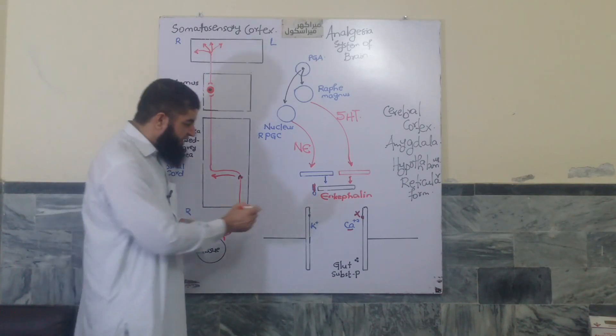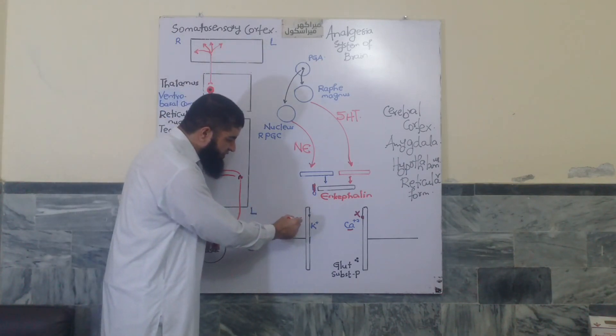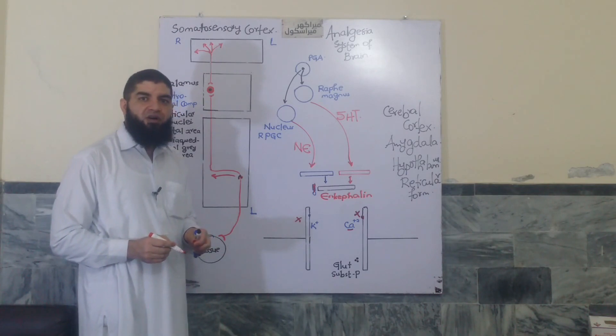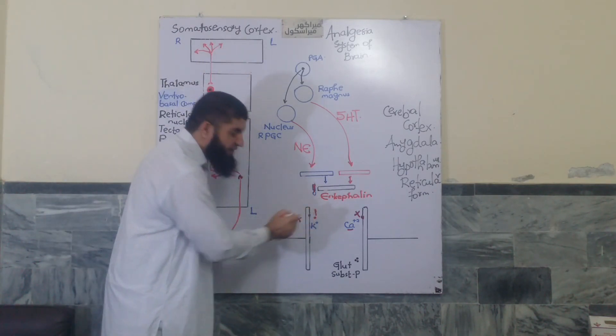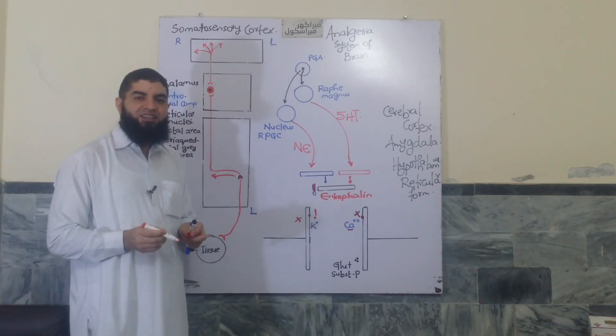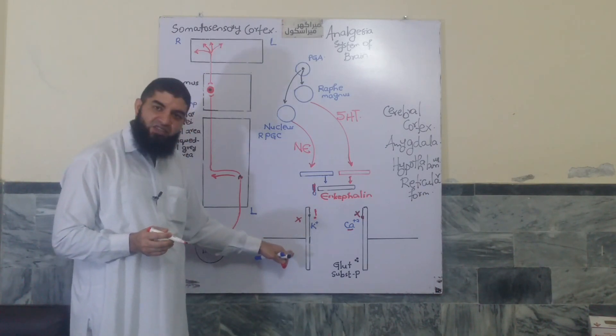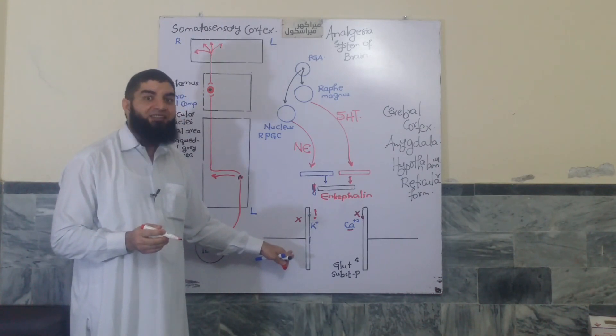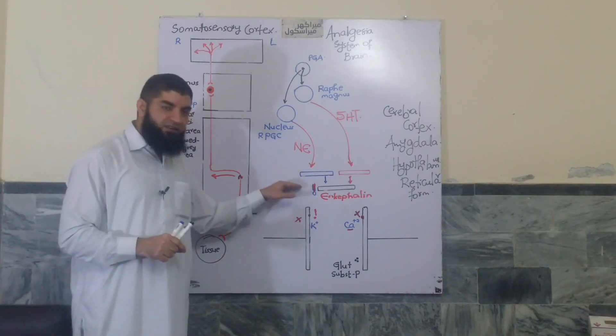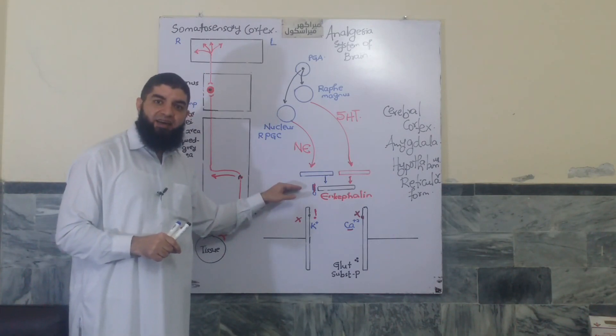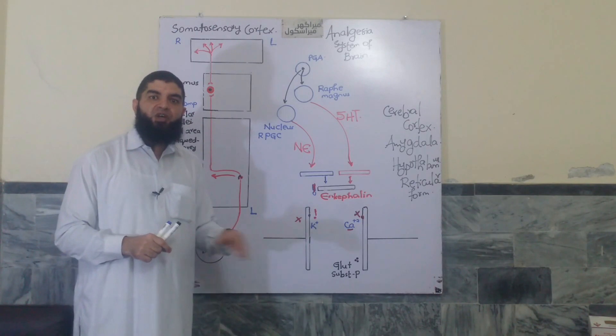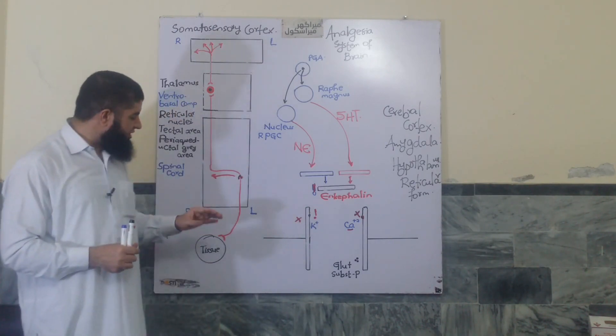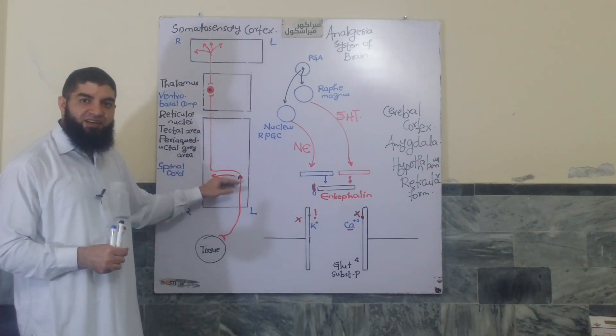Still later, it causes post-synaptic inhibition as well. Here, in the post-synaptic neuron, it binds again here to its opioid receptors and causes increased potassium conductance, thereby making this neuron hyperpolarized. That is difficult to excite. This is how the descending pathway causes pre-synaptic and post-synaptic inhibition so as to block the entry of pain impulses into the spinal cord.